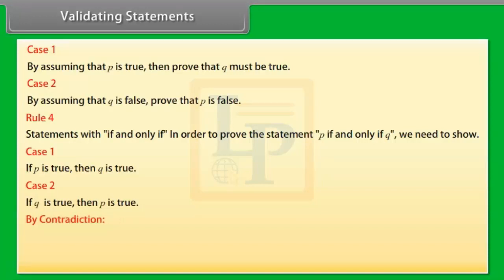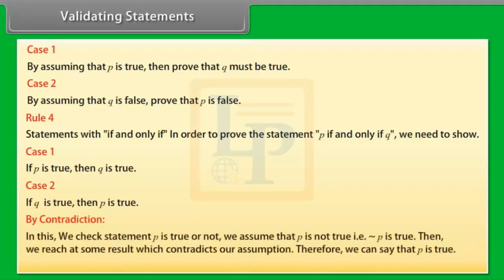By contradiction: To check whether statement P is true, we assume that P is not true, that is negation of P is true. Then we reach a result which contradicts our assumption. Therefore, we can say that P is true.